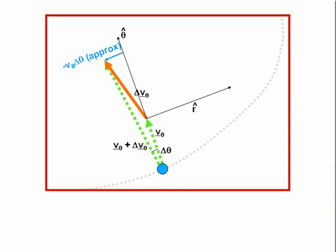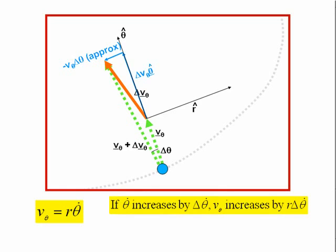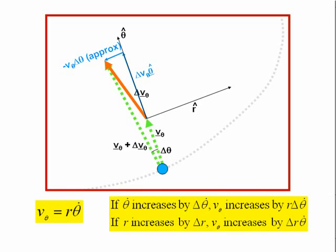The tangential component of the red vector delta-v-theta in the theta-hat direction is delta-v-theta. Since v-theta equals r theta-dot, there are two ways in which the tangential speed can change. If theta-dot increases by delta-theta-dot, v-theta increases by r delta-theta-dot. Secondly, if r increases by delta-r, v-theta increases by delta-r theta-dot.